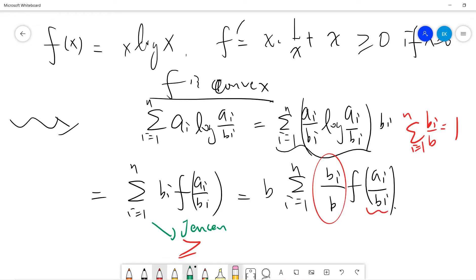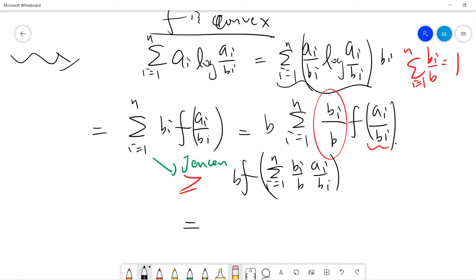greater or equal to, let's say, b times sum from i=1 to n of (bi/b) times (ai/bi), and take f, which is b f of sum from i=1 to n of ai/b, right.